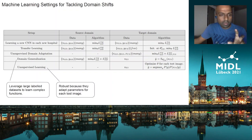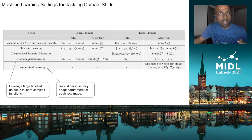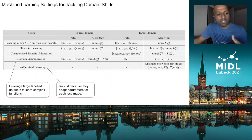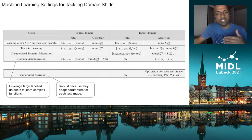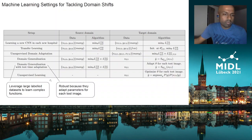These two paradigms have complementary benefits. Supervised learning can leverage labeled datasets to learn complex input-output mappings. On the other hand, unsupervised learning, because it does not learn from a source domain, does not overfit to a source domain, so it is inherently robust to changes in acquisition parameters or other types of domain shifts. The question is: can we combine the benefits of these two types of approaches? And this is what we propose here.